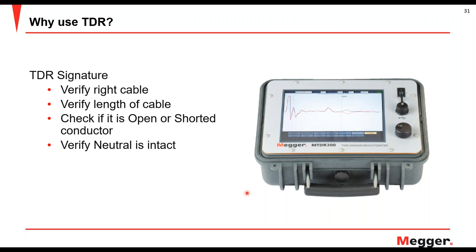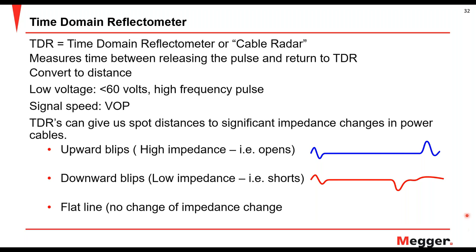As I was telling you before, a high end on the trace means there's an open. I have a red one that means I used arc reflection — the downward blip is where your fault is. If this were just a straight TDR shot in blue, the TDR is only about 60 volts but a high frequency pulse. It will flag where there is a short — this could be where your cable is actually grounded to the other transformer tank on a standoff, or where the center conductor and the shield are physically touching each other. No change means there's nothing — it's just flat.